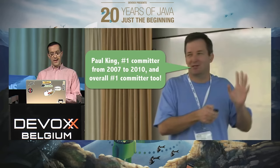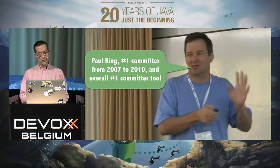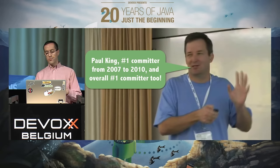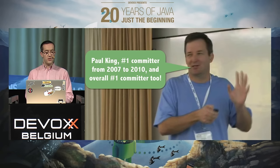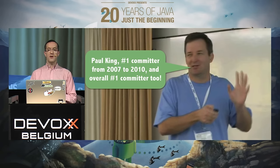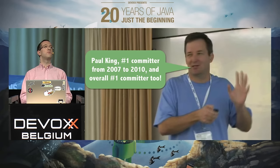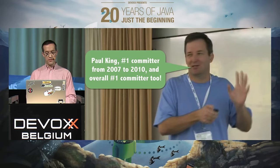Paul King, the most prolific Groovy committer, joined the project in 2007 and really became the number one committer since the beginning of the project.